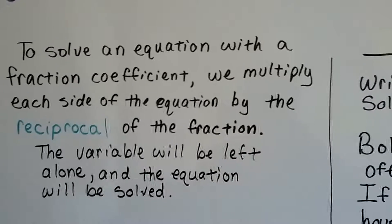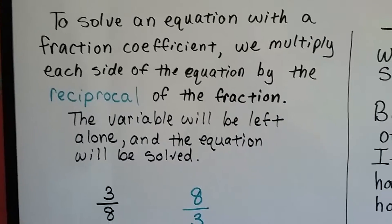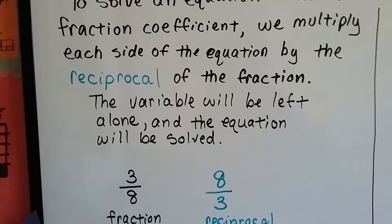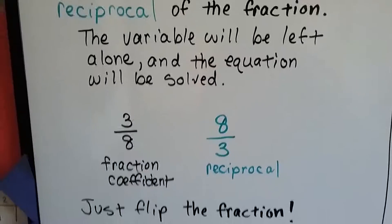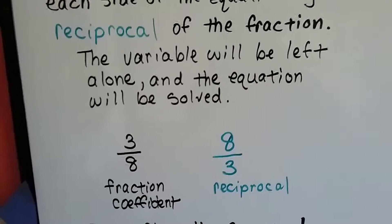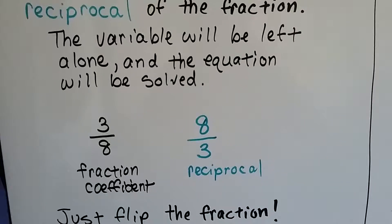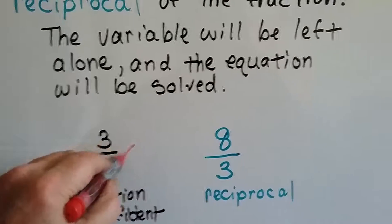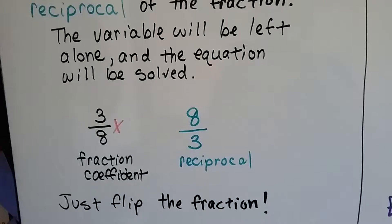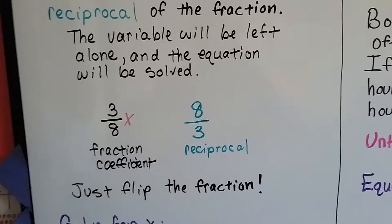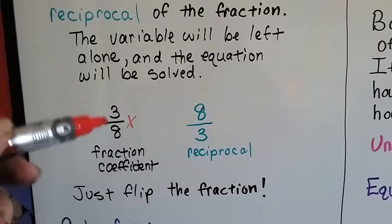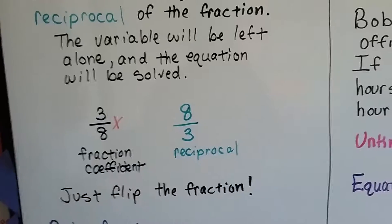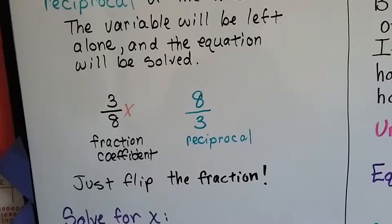To solve an equation with a fraction coefficient, we multiply each side of the equation by the reciprocal of the fraction. The variable will be left alone, and the equation will be solved. What's a reciprocal? Well, that's very simple. If 3 eighths is the fraction coefficient, then 8 thirds is the reciprocal. You just flip him upside down. There was a 3 as a numerator and an 8 as a denominator, and it got flipped around.